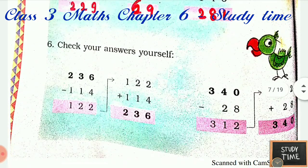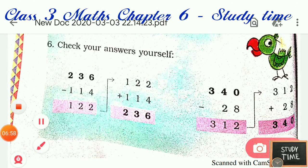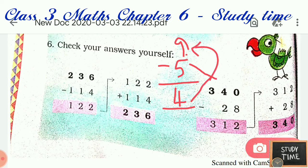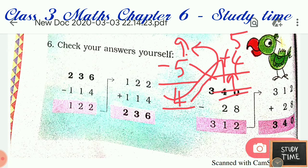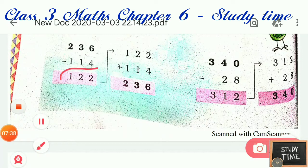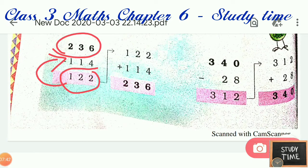Next, check your answers yourself. For example, 9 minus 5: if you subtract you get 4. To check whether your subtraction is right, add the two parts back: 5 plus 4 equals 9, so the subtraction is right. Similarly, for the given answers, you can add the two parts to check — if you get back 236, your subtraction is correct.